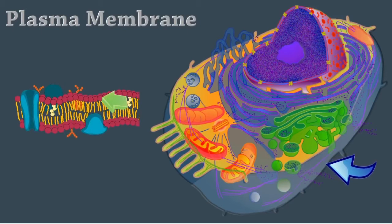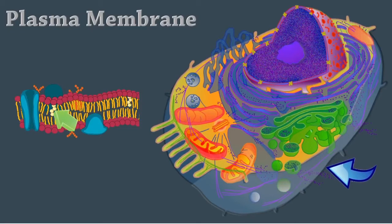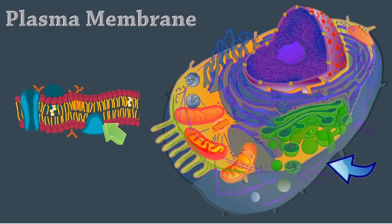It's made from a bilayer of phospholipids, cholesterol, and proteins, and it acts as a semipermeable barrier. It creates the cell's internal and external environments.